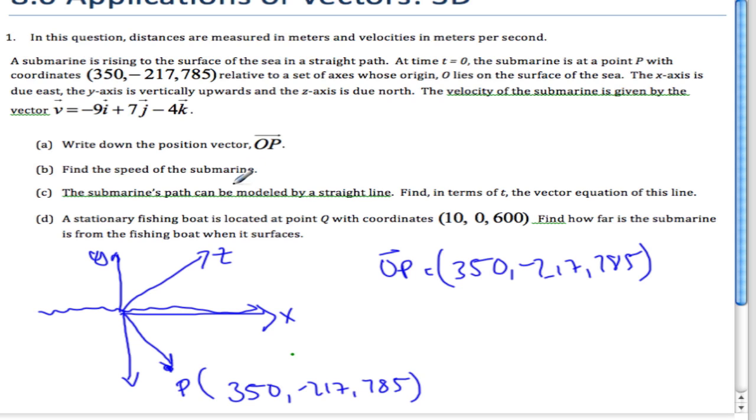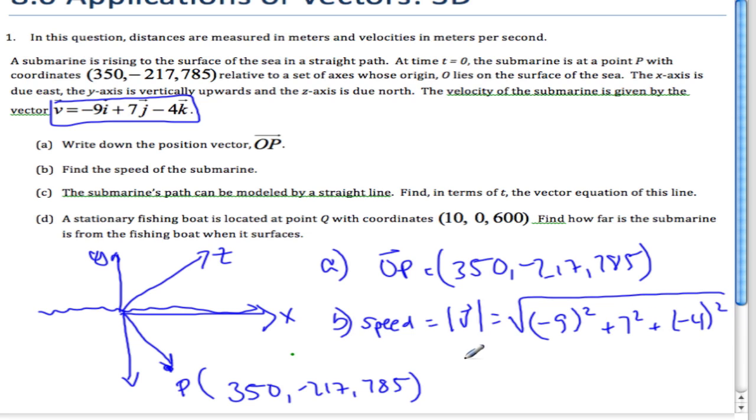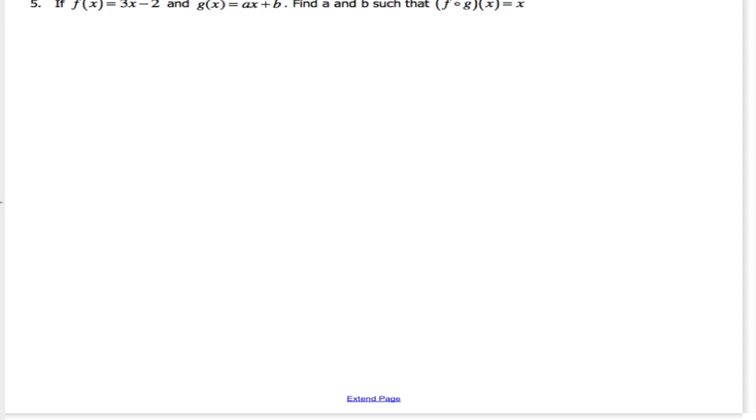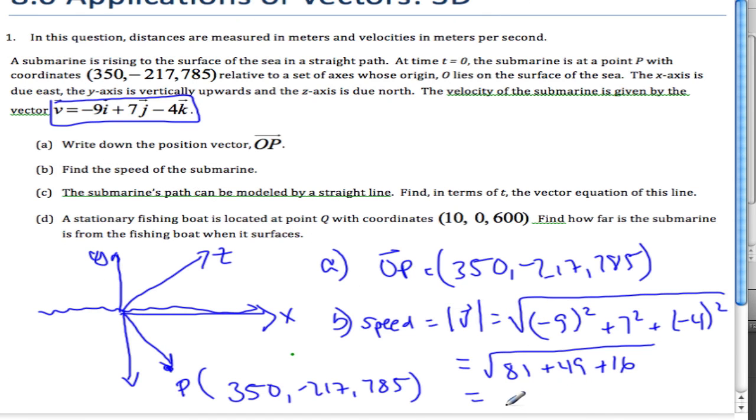Part B: I want to find the speed of the submarine. This is my velocity. The speed is the magnitude of this vector. So the speed equals the magnitude of my velocity vector, which is the square root of (-9)² + 7² + (-4)². That's 81 + 49 + 16, which equals 12.1 meters per second.